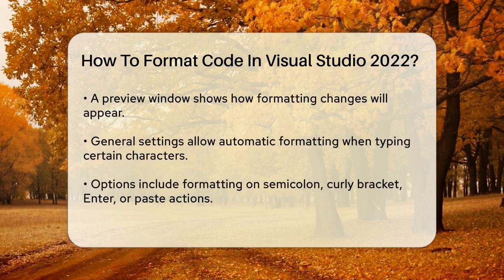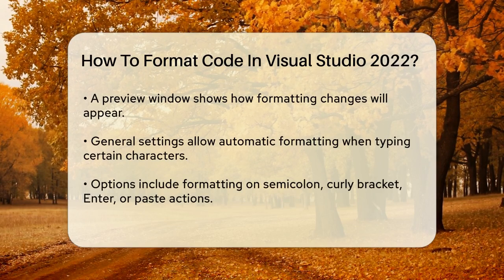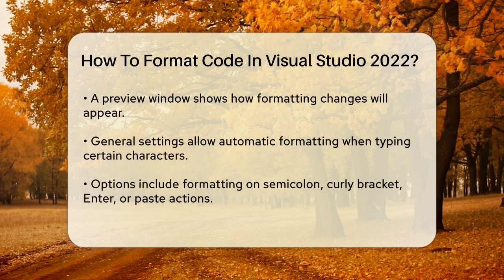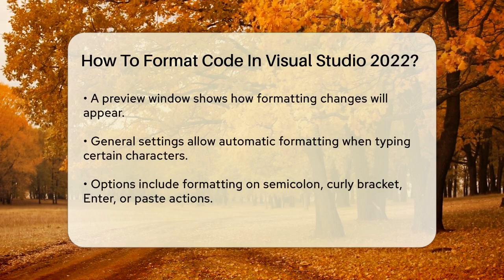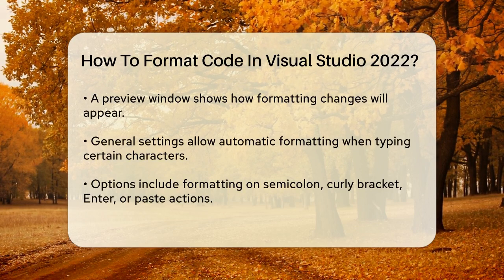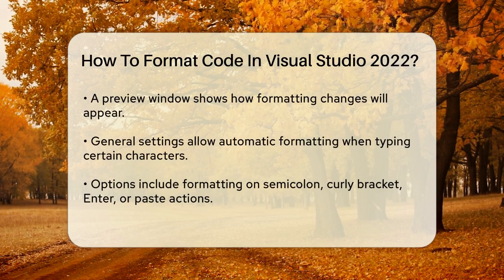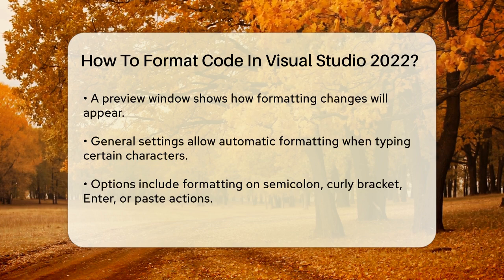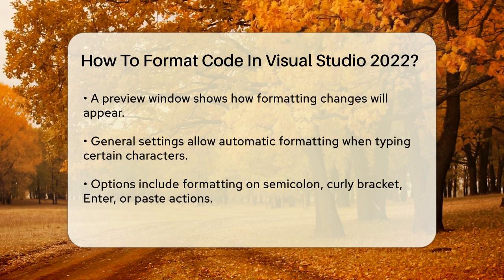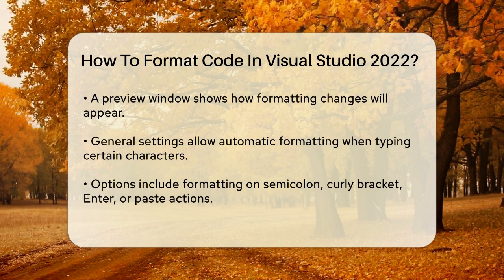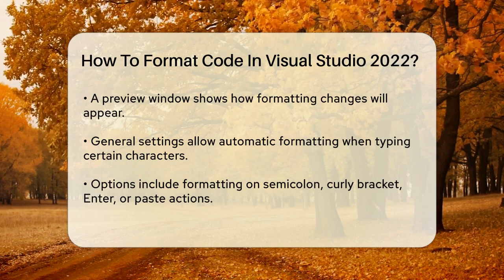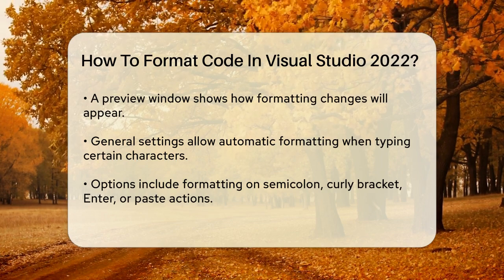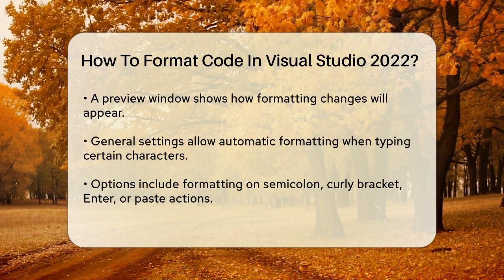For example, under the General Settings, you can choose to automatically format your code when you type, such as formatting statements when you press the semicolon, or formatting code blocks when you close the curly bracket. You can also set it to format the code when you press Enter or when you paste code into the editor.